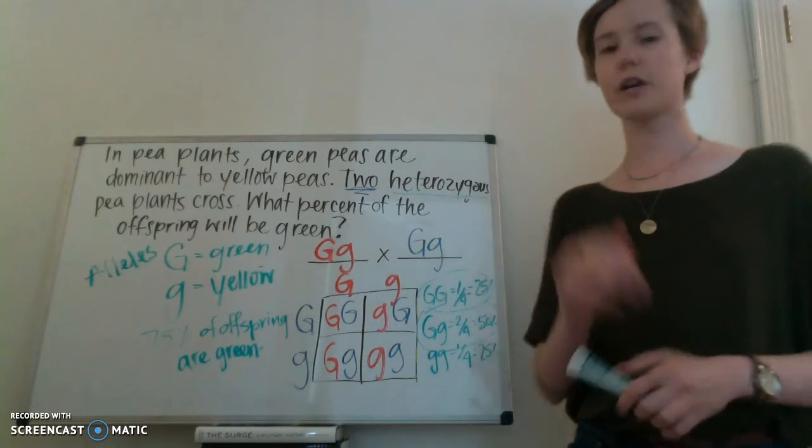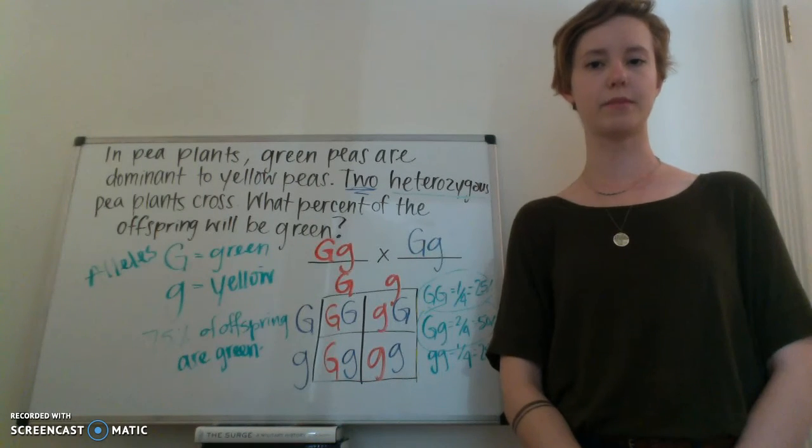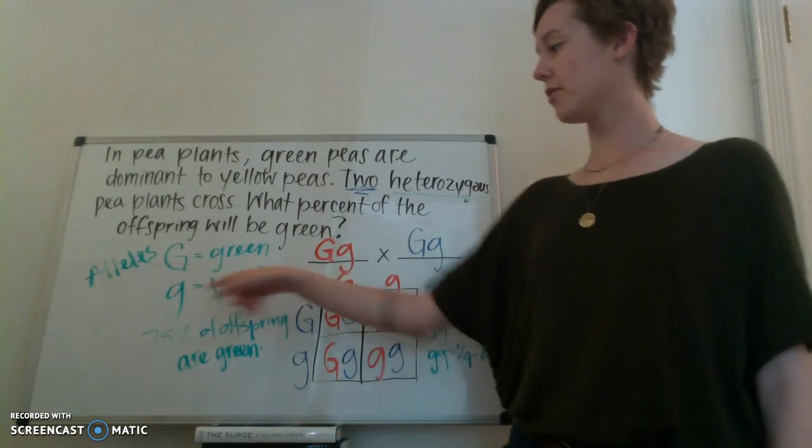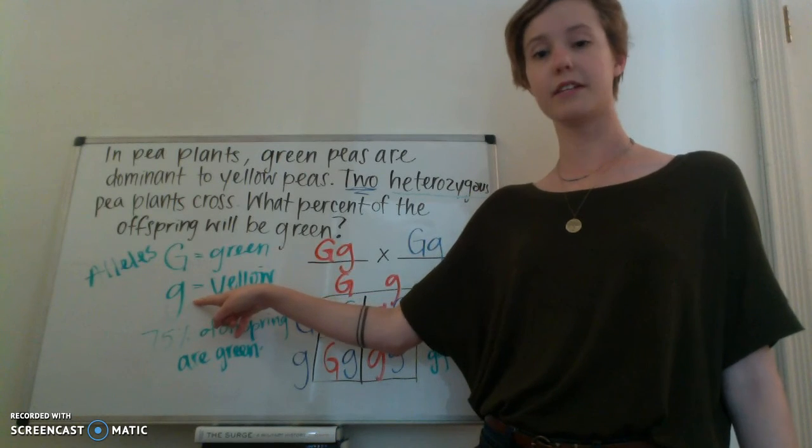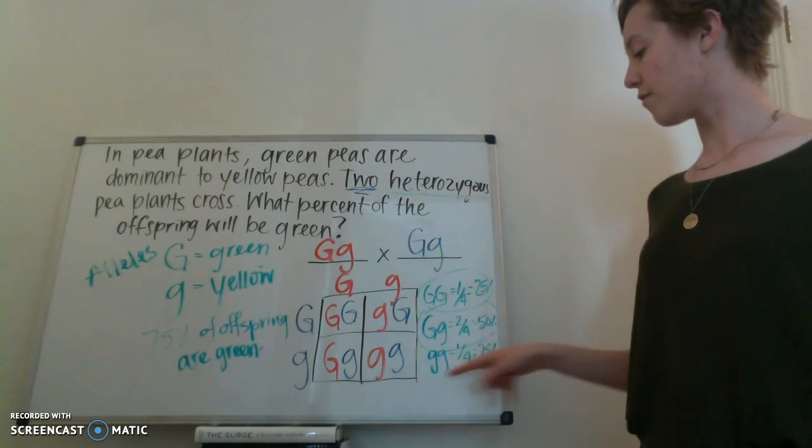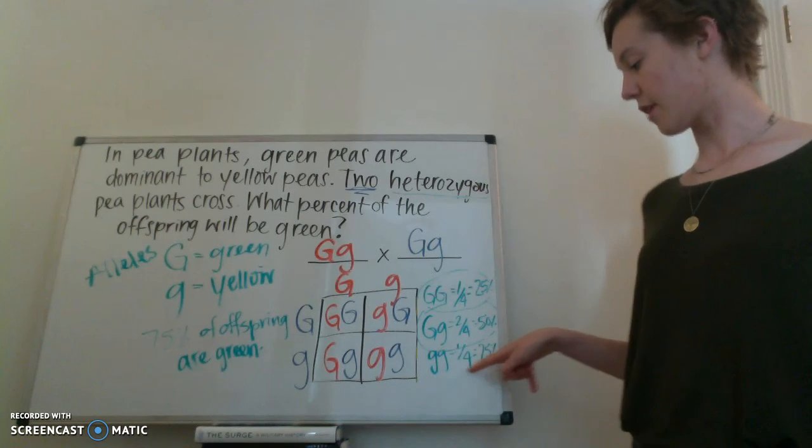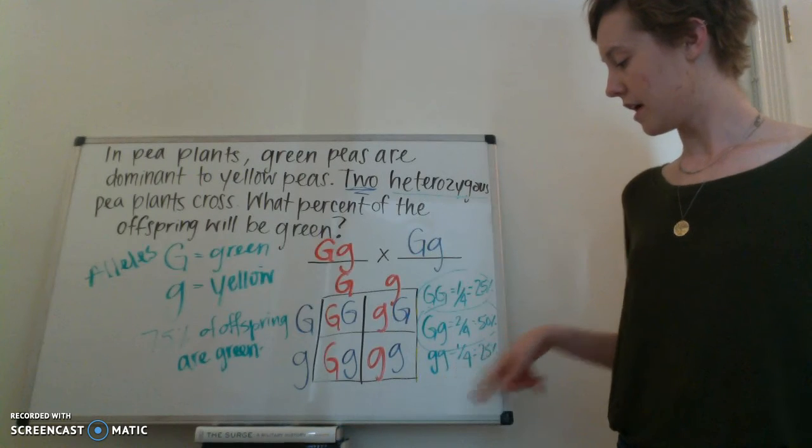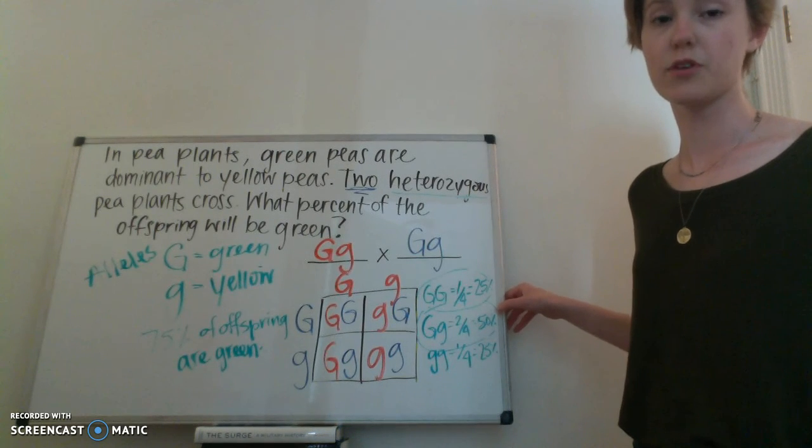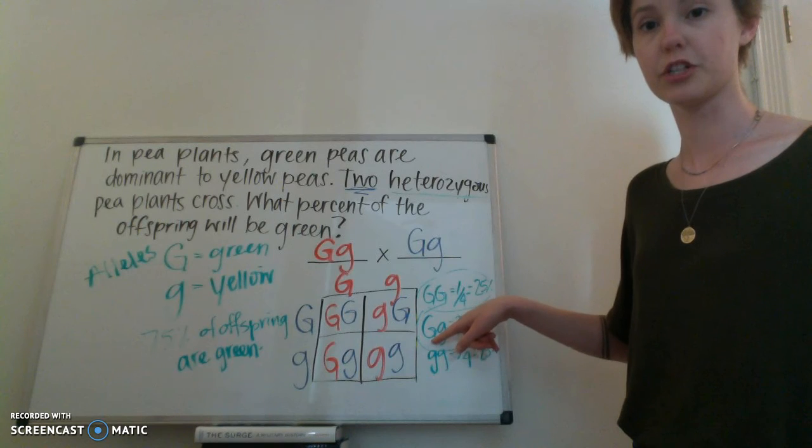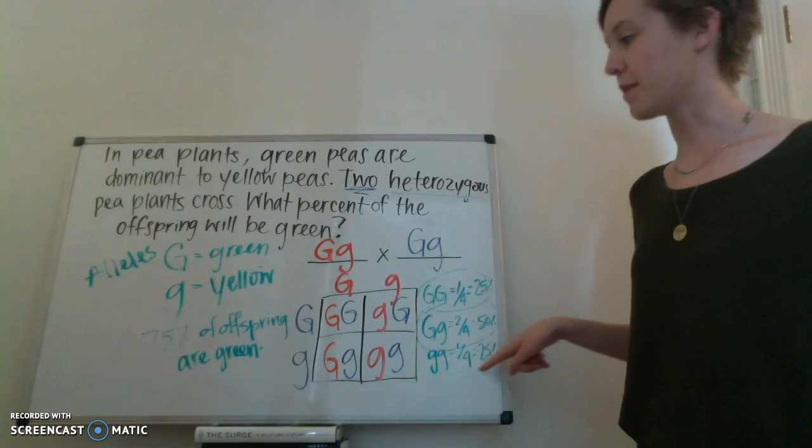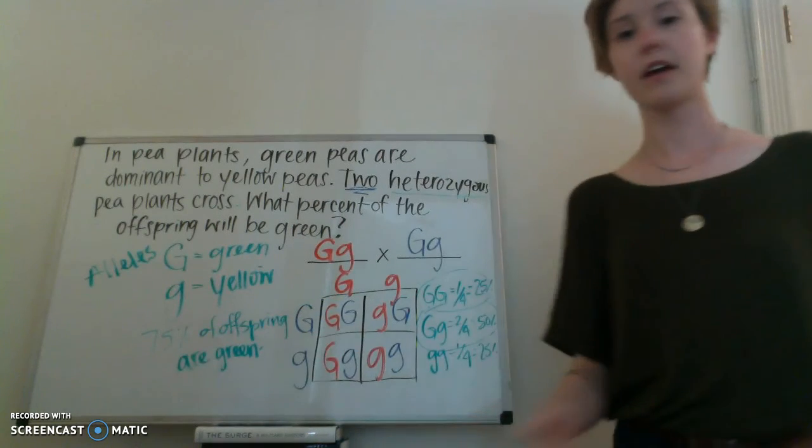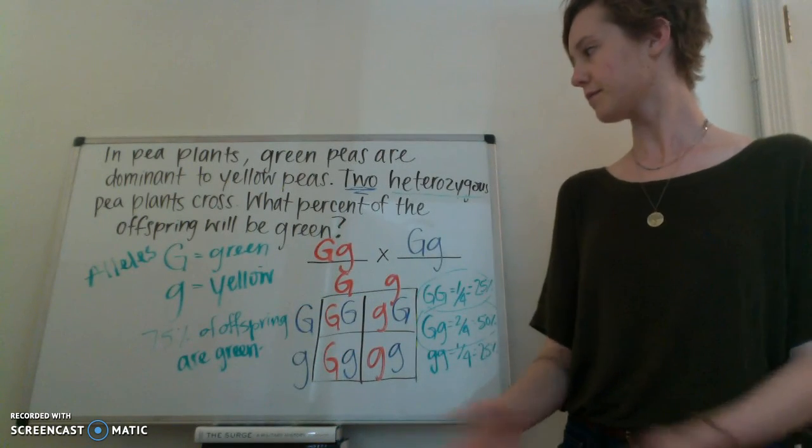If this question asked yellow, what would the answer be? I really hope you're saying 25%. Yellow is the recessive allele in this case. We only have one option here that will give us the yellow phenotype. As a reminder, this one will only be green if it has this big G, and big G is dominant. So that means 25% are yellow. That makes sense. 25, 75% add up to 100% of our kids.